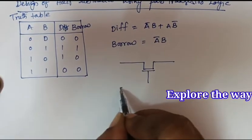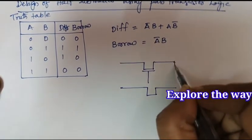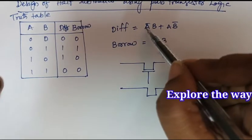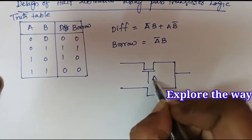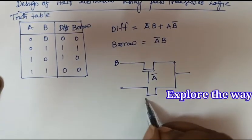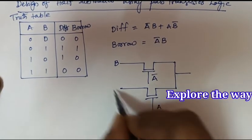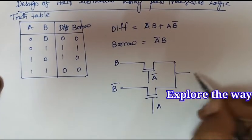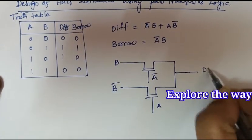This is one pass transistor. Second one. Now the first term A bar B. Let us connect A bar to the gate and B here. And the second one is A B bar. This is the difference output.